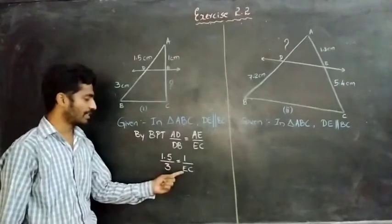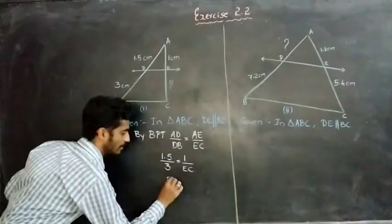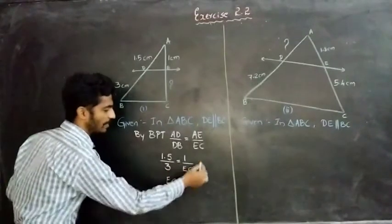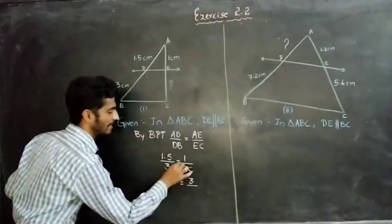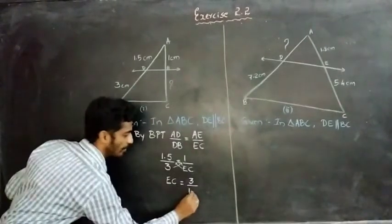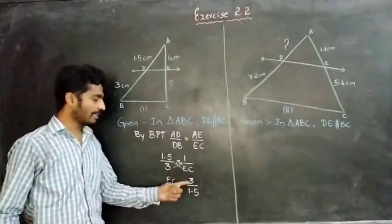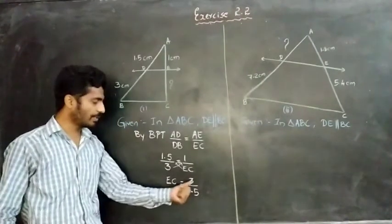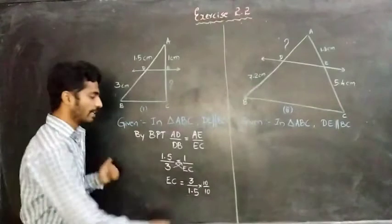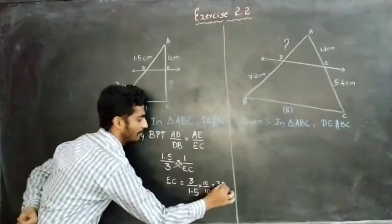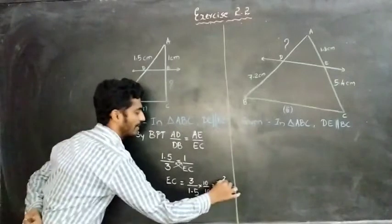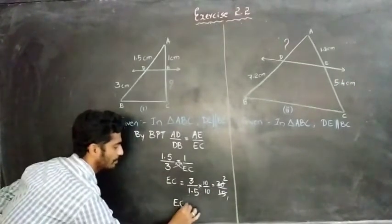Now substitute the values: AD is 1.5, DB is 3 cm, AE is 1 cm, and EC we don't know — keep it as is. Now do the cross multiplication. Take EC to the left side and 1.5 goes to the right side as division, giving EC equal to 3 divided by 1.5. Multiplying numerator and denominator by 10, we get 30 divided by 15, so EC is equal to 2 cm.